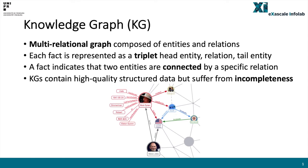Despite the fact that modern knowledge graphs contain high-quality structured data, they are also known to suffer from an incompleteness issue. For example, 71% of all people from Freebase have no place of birth. These figures represent a knowledge graph, where for example Bob Dylan is the head entity, Lives-in is the relation, and the United States is the tail entity.